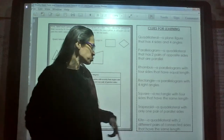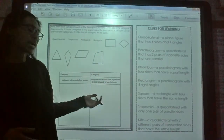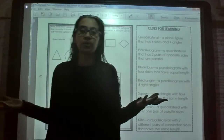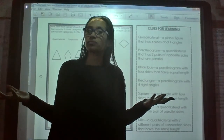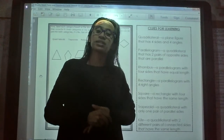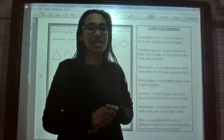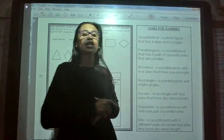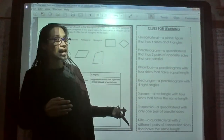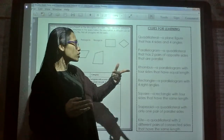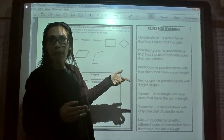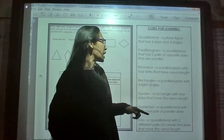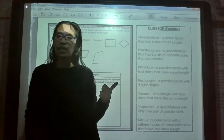A trapezoid is a quadrilateral with only one pair of parallel sides. A kite is a quadrilateral with two different pairs of connected sides that have the same length. All these shapes have something in common — they are all quadrilaterals, which is a shape with four sides and four angles. We have special kinds of quadrilaterals: parallelograms, rhombi, rectangles, squares, trapezoids, and kites.